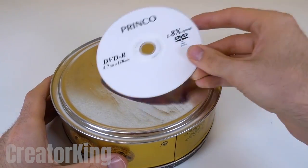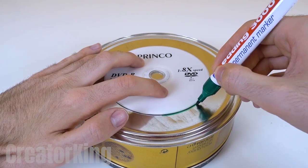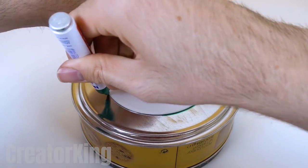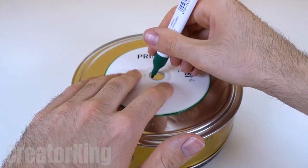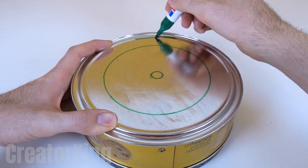Find an old DVD that you no longer use and place it on the base of the cookie box. Then with any marker trace both the outer circumference as well as the inner circumference. With the same marker mark the outline of the base.